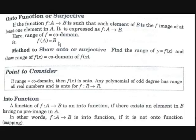You can express this as f(A) = B, meaning every element in B is covered. The method to show onto or surjective is simple: first find the range of the function y = f(x), then show that the range of f(x) equals the codomain of f(x). If range equals codomain, then f(x) is onto.